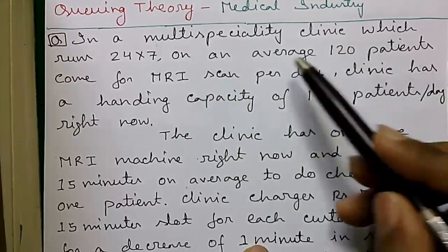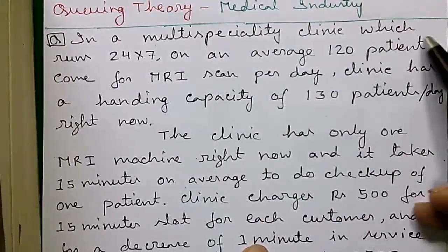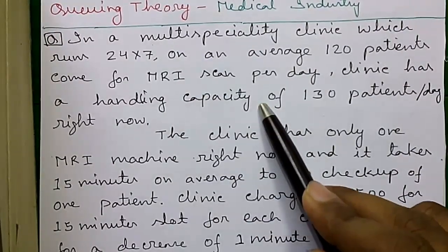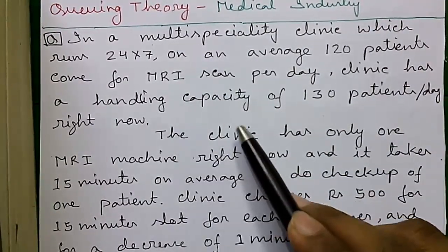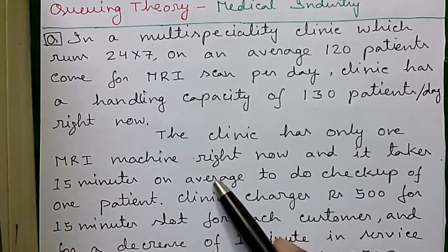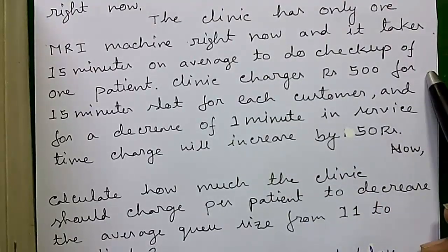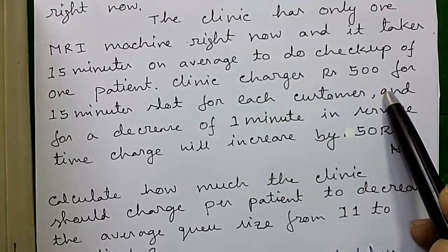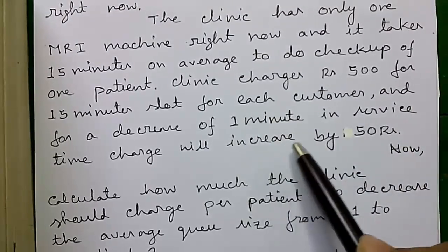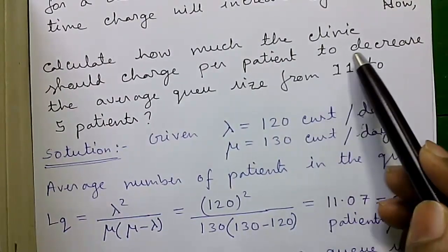So for now, let's start. Our question is: in a multi-speciality clinic which runs 24 by 7, on an average 120 patients come for MRI scan per day. The clinic has a handling capacity of 130 patients per day right now. The clinic has only one MRI machine right now and it takes 15 minutes on average to do check up of one patient. Clinic charges rupees 500 for 15 minutes slot for each customer, and for a decrease of 1 minute in service time the charge will increase by 50 rupees.